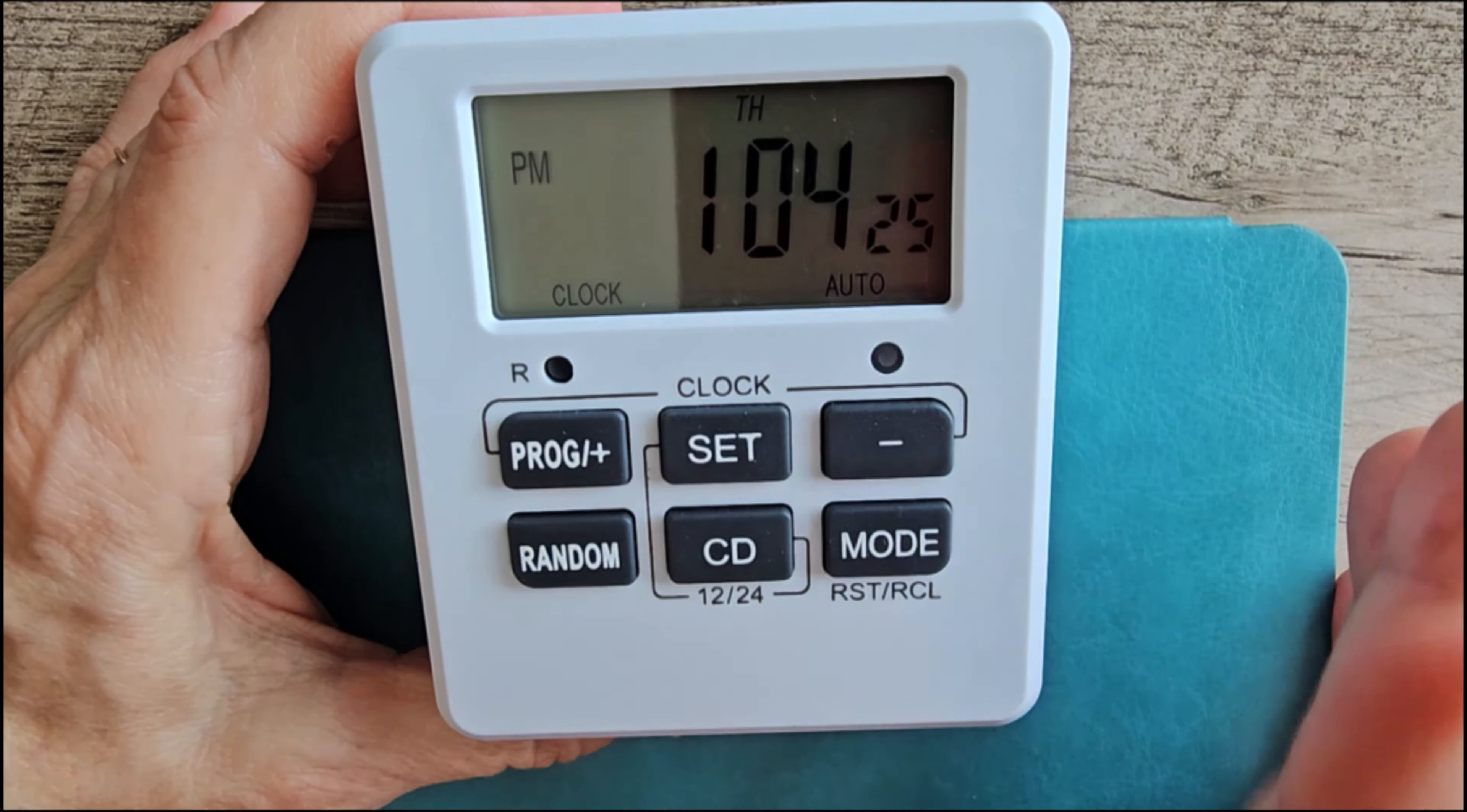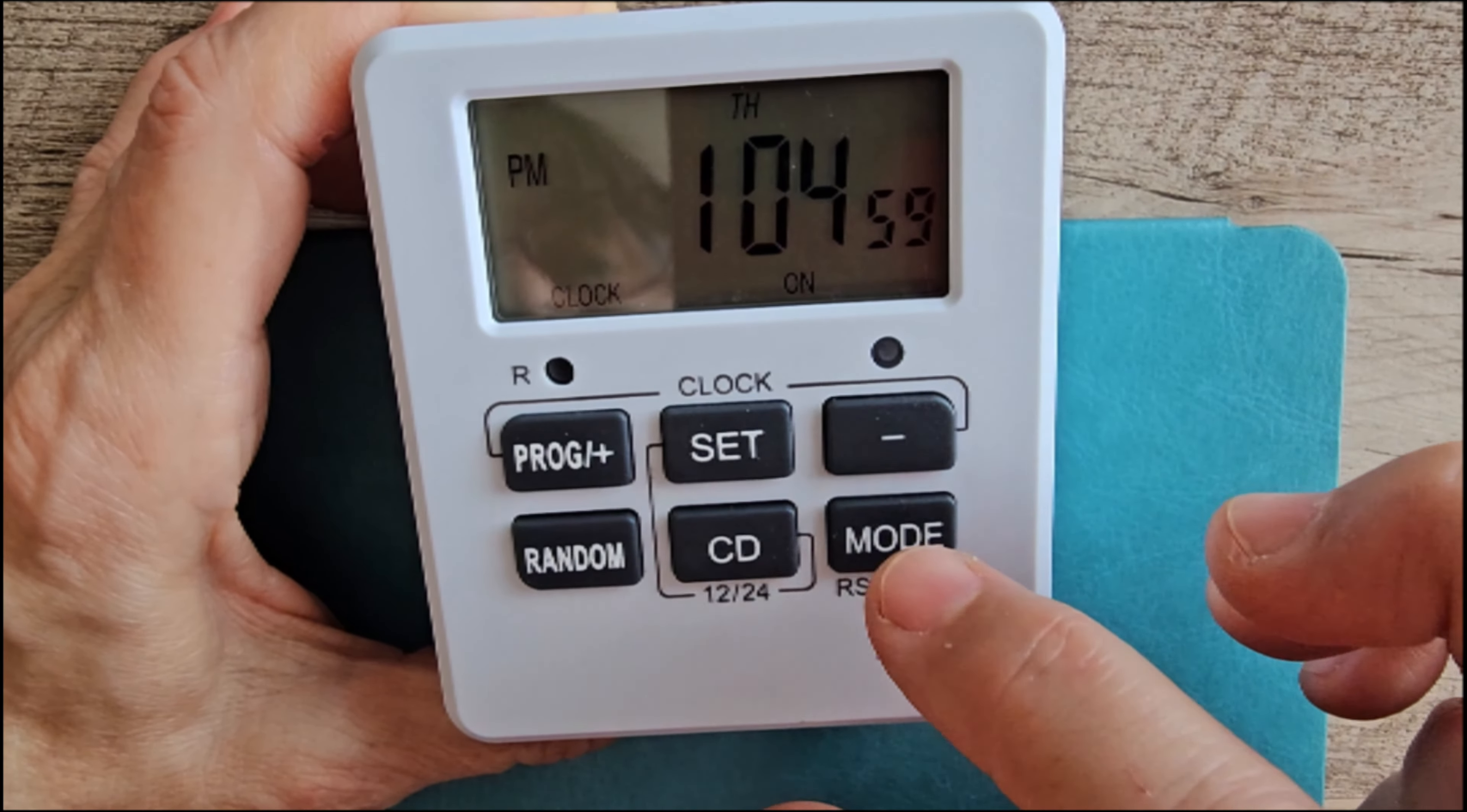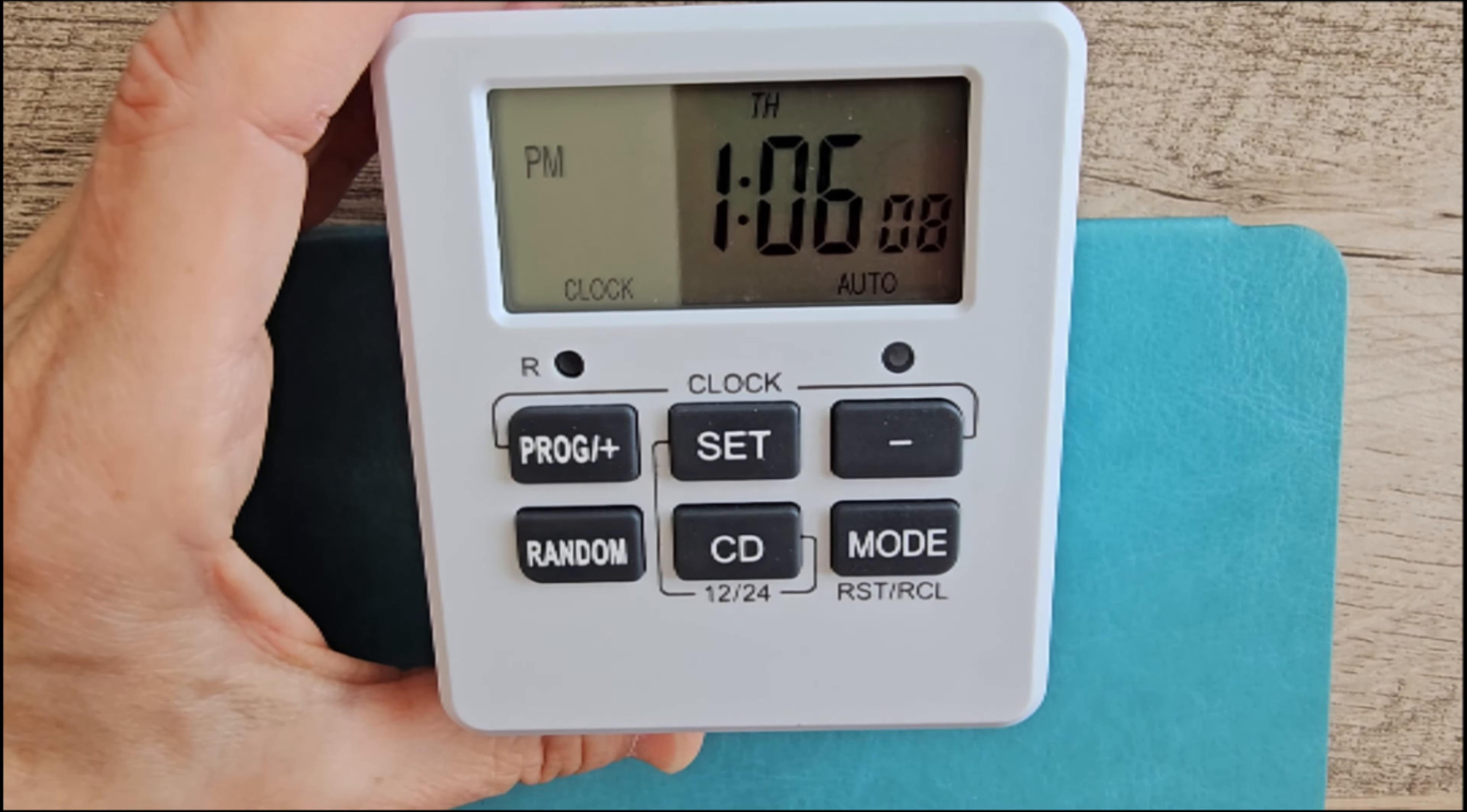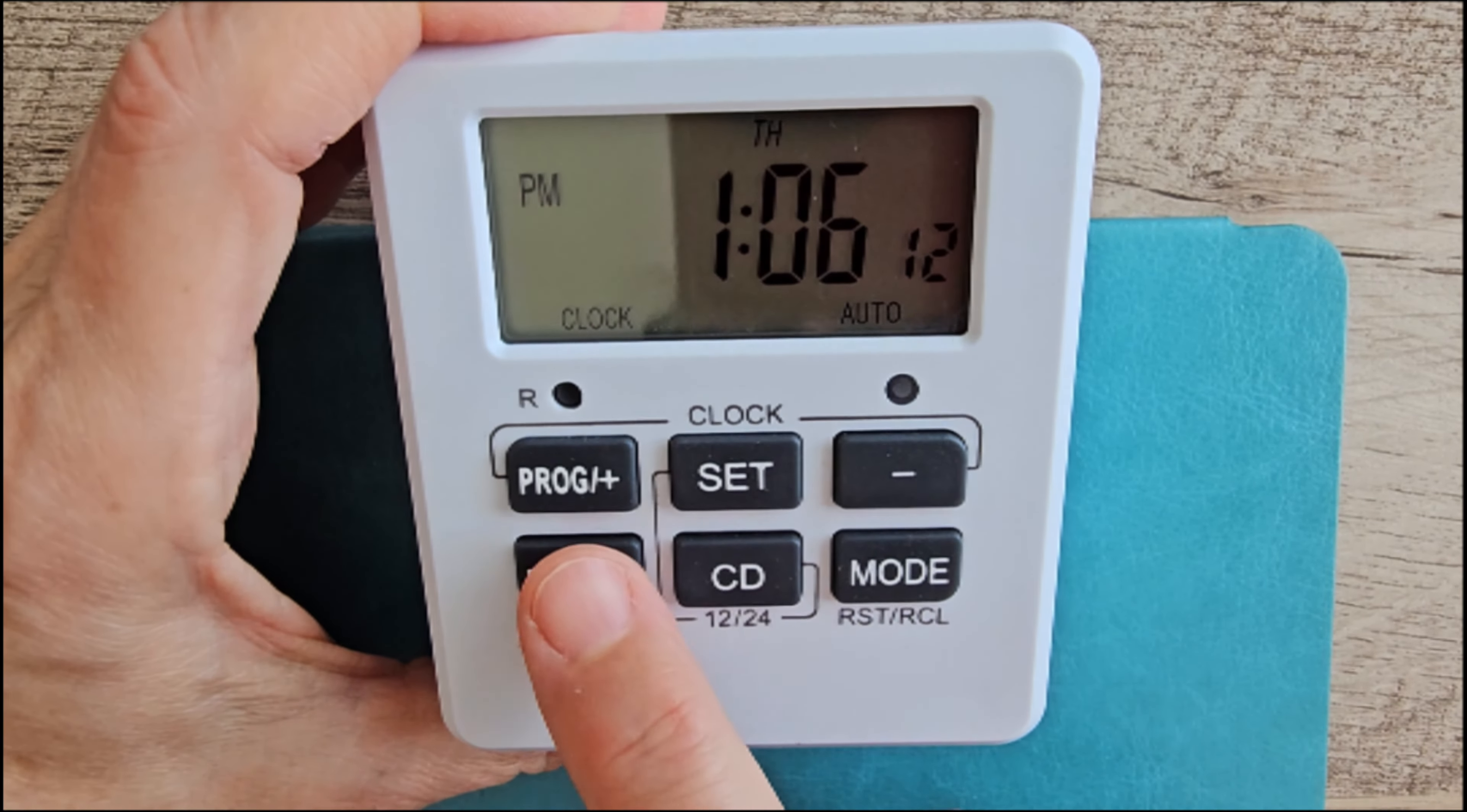See down here in the lower right, it says auto. That means it's going to use the program functions to turn both outlets on and off. Now it says on. That means the electricity is always going to be on to your devices. So auto, off. And auto, on. Auto, off. Auto, on.